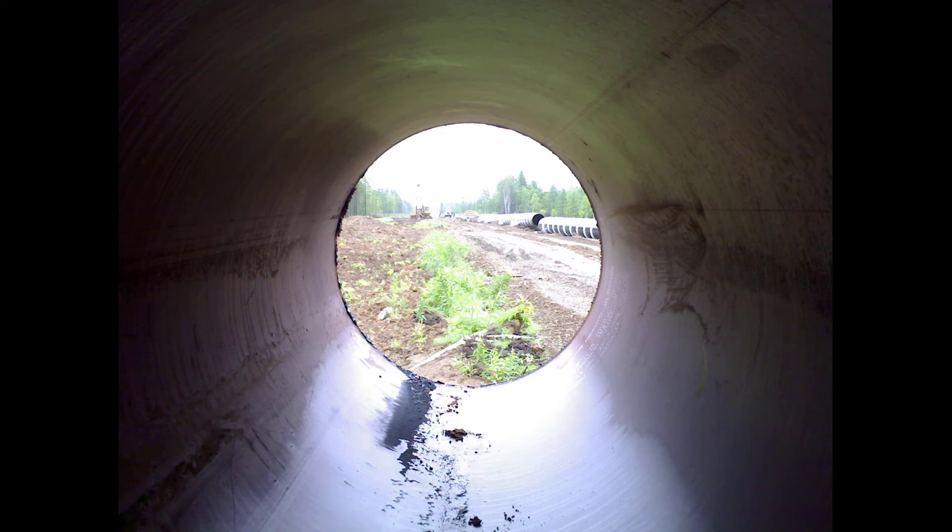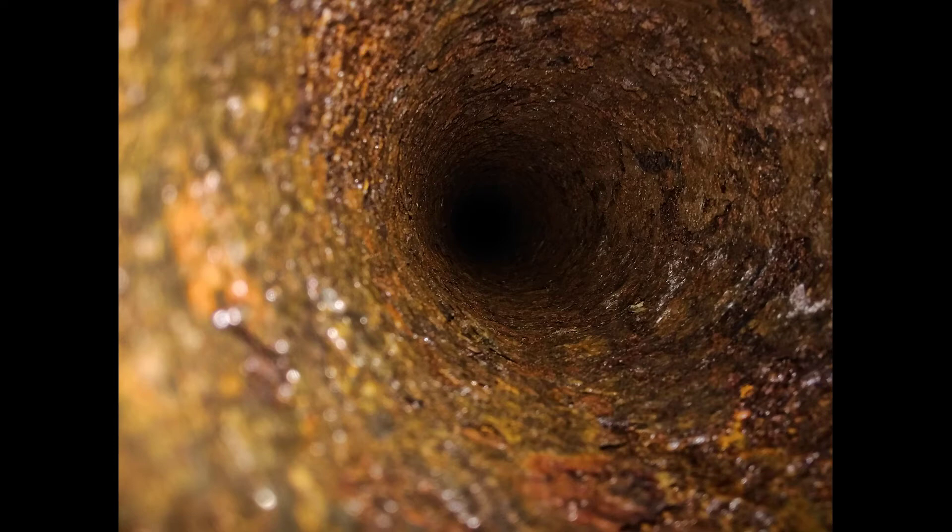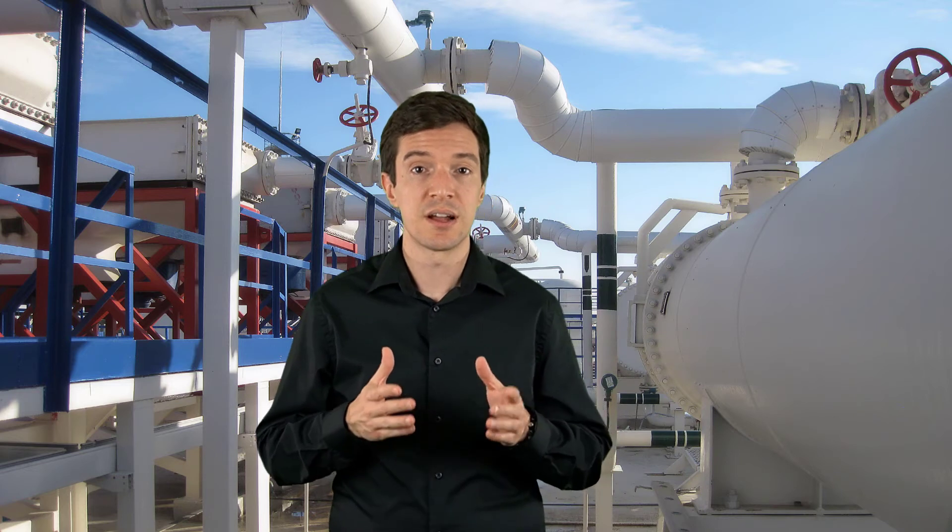For smooth pipes, the Darcy friction factor is a function of the Reynolds number. In real world, however, pipes are not smooth. Each pipe has its own surface texture. For example, a new pipe can be fairly smooth, while an older pipe can be corroded and rusty, so its internal surface is rougher. The surface texture of a pipe can be described as a sand roughness height or through an equivalent grain roughness height.